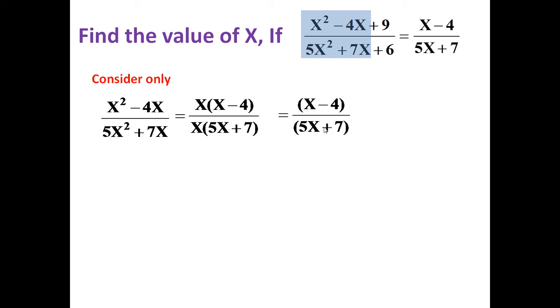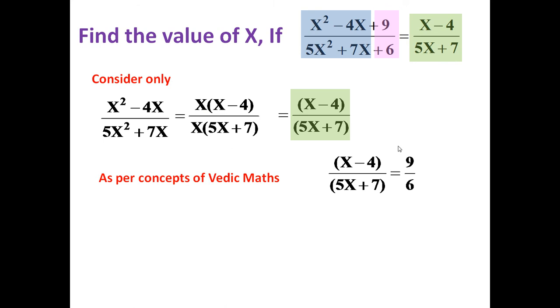x, x cancel. It becomes x minus 4 divided by 5x plus 7. Now, these two terms are same. Right hand side and this simplified term, they are same. It means this right hand side term x minus 4 divided by 5x plus 7 is equal to some ratio of this constant term that is 9 upon 6.